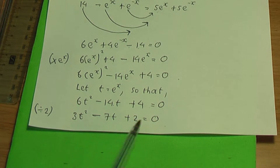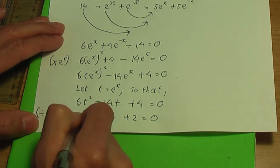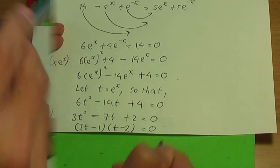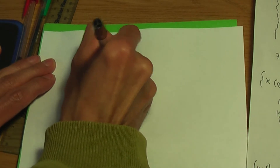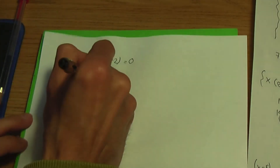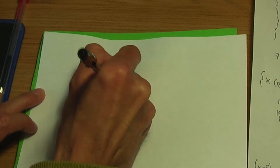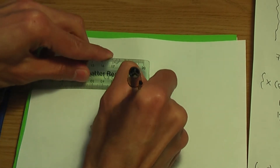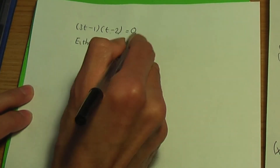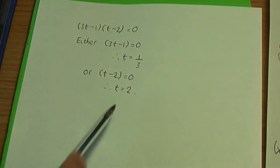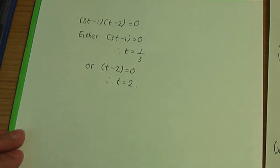We can factorise or use the quadratic formula. Factorising gives (3t minus 1)(t minus 2) equals 0. So either 3t minus 1 equals 0, giving t = 1/3, or t minus 2 equals 0, giving t = 2. So we have two t values: one-third and two.